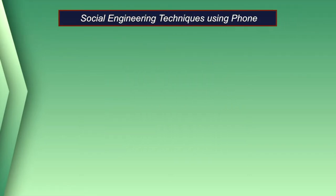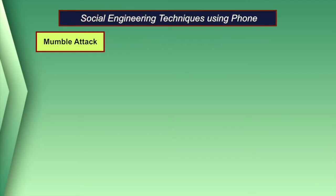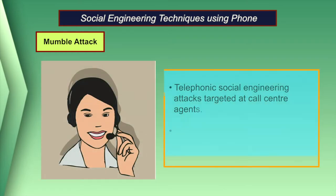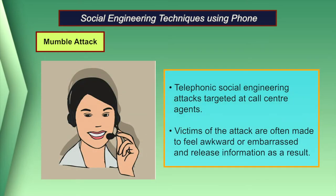Now let us discuss various types of social engineering techniques using phone. The first technique is the mumble attack. Mumble attacks are telephonic social engineering attacks targeted at call center agents. The social engineer poses as a speech-impaired customer or as a person calling on behalf of a speech-impaired customer. Victims of the attack are often made to feel awkward or embarrassed and release information as a result.